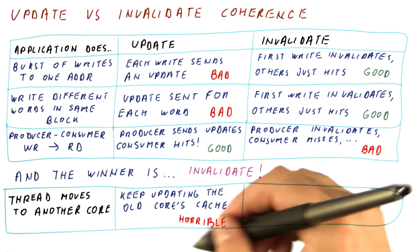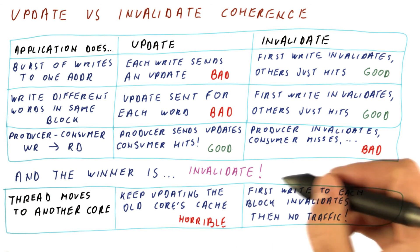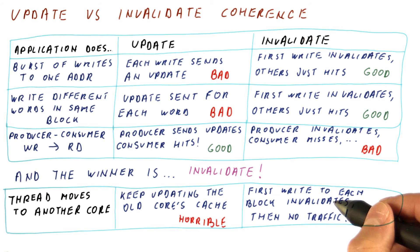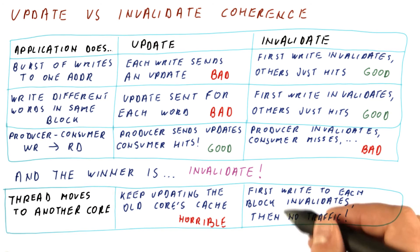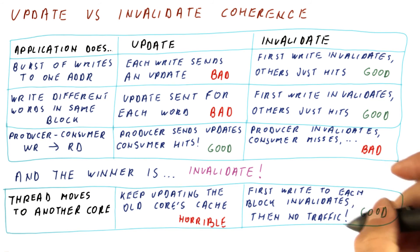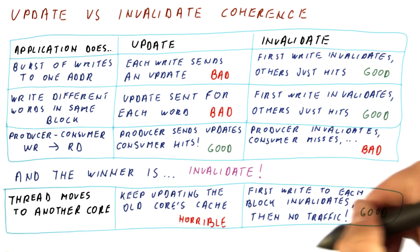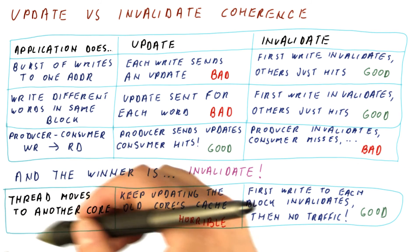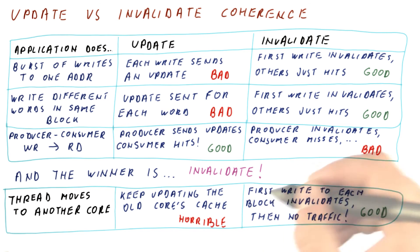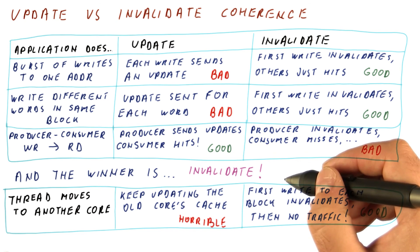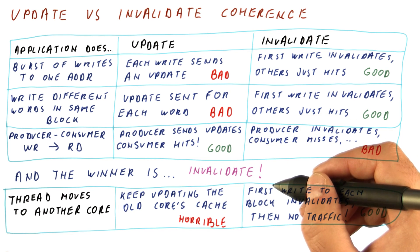With invalidates, the first write to each block invalidates the old copy, but after that initial period there will be no traffic anymore. This is about as good as it gets without explicitly copying the old cache's contents to the new cache. Since thread migration is pretty common operating system behavior, we really don't want it to perform horribly. Because invalidate-based protocols are commonly used, we will now look at invalidation-based protocols for the rest of this lesson.